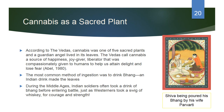According to the Vedas, cannabis was one of the five sacred plants and a guardian angel lived in its leaves. The Vedas call cannabis a source of happiness, a joy-giver, a liberator compassionately given to humans to help us attain delight and lose fear. The most common method of ingestion was to drink bhang, an Indian drink made from the leaves. During the Middle Ages, Indian soldiers often took a drink of bhang before entering battle, just as Westerners would take a swig of whiskey for courage and strength.